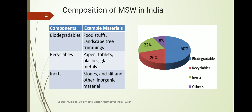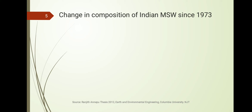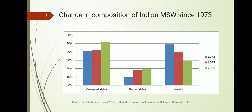Segregation is very important when going for energy production from municipal solid waste. You must first separate the recyclable materials like plastic and wood, and separate the inert material — this is a big challenge. A study by Ranjit in 2012 shows that the composition of Indian MSW has been changing. Studying data from 1973, 1995, and 2005, the percentage of combustible and biodegradable material has been increasing.